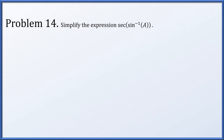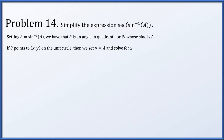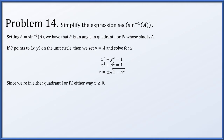In problem 14, simplify the expression secant of arc sine of a. Let theta equal arc sine of a, meaning theta is an angle in quadrant one or four whose sine is a. The angle points on the unit circle where y equals a, so using x squared plus y squared equals one, x is plus or minus the square root of one minus a squared. Since we're in quadrant one or four, the x coordinate is not negative, so x equals the square root of one minus a squared. Secant of theta is one over x, so the secant of arc sine of a is one over the square root of one minus a squared.